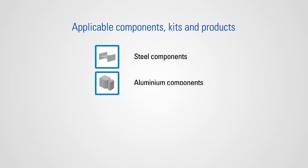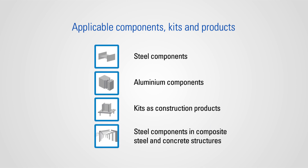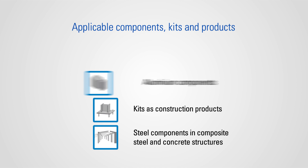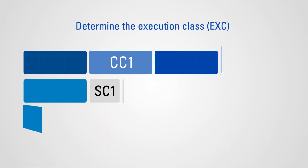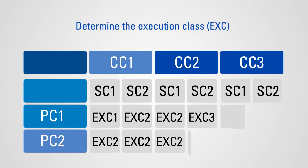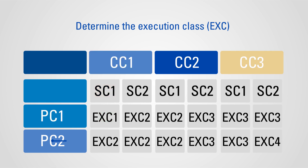Whether you're producing steel or aluminium components, construction kits, or steel components used in composite steel and concrete structures — in series or non-series production — the EN 1090 standards will apply to you.